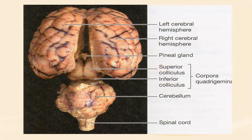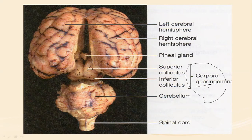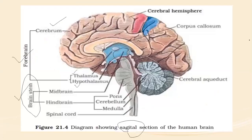The corpora quadrigemina is equivalent to the optic lobe in lower animals. The word 'quadri' means four, so you can see four lobes here, formed by the superior colliculus and inferior colliculus, making up the corpora quadrigemina structure in the midbrain.